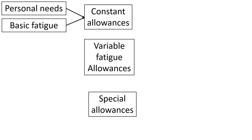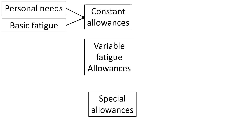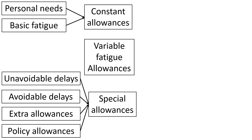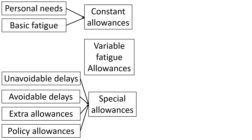There are also special allowances which we'll talk about soon. For constant allowances, two things are added: personal needs and basic fatigue. For special allowances, there are basically unavoidable delays such as machine maintenance. Avoidable delays should not be included in the time study. However, things like social interactions and talking also cause delays.